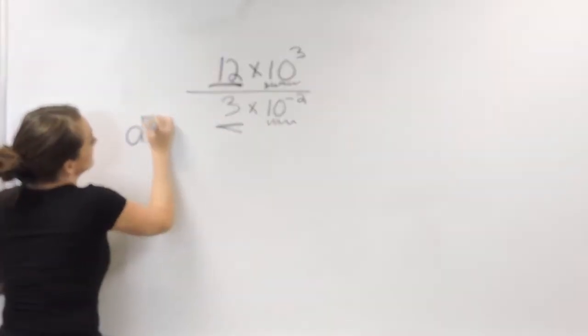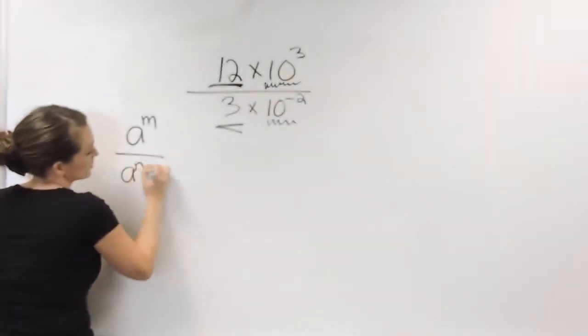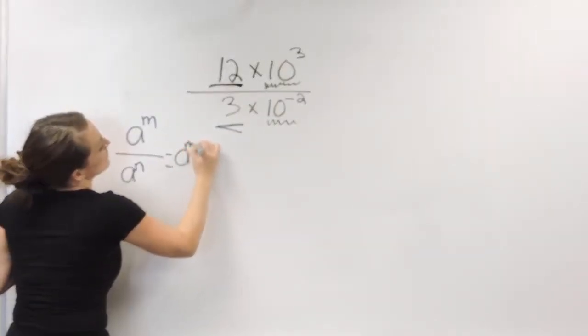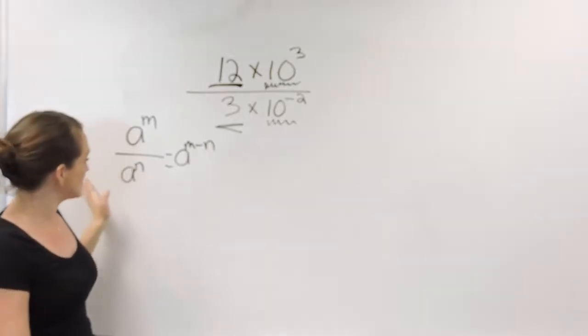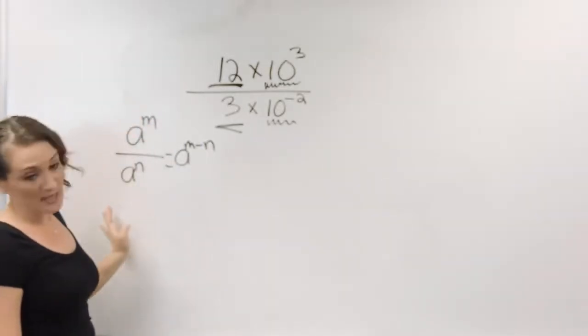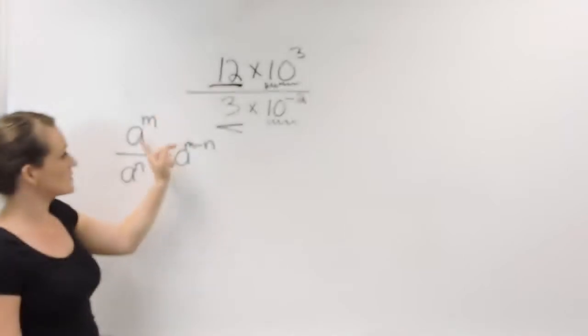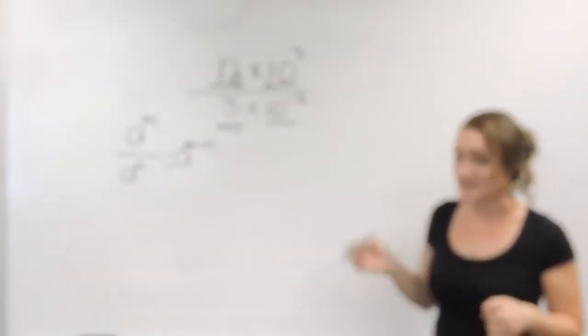Just in case you may be a little bit rusty on what the quotient rule looks like, the quotient rule looks something like this. When you are dividing like bases, you move that base over, and what you do is you subtract your exponents. The top one always minus the bottom one.